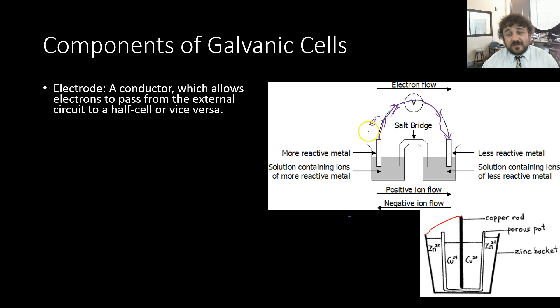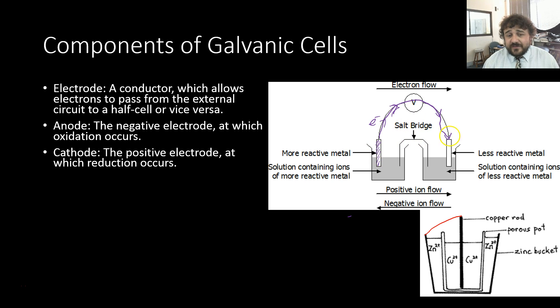That's the direction of flow of electrons. The anode is this one here—it's the negative electrode where oxidation occurs. It's the one that loses the electrons, so electrons go this way. The cathode is the positive electrode, which means it attracts the electrons. The electrons move across this way over here.